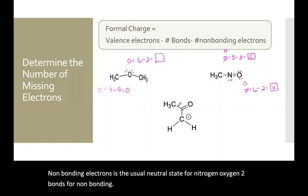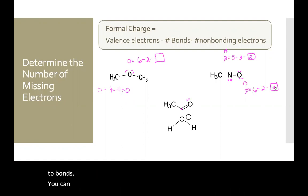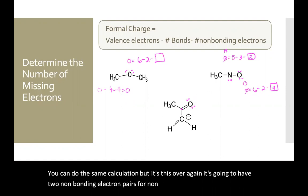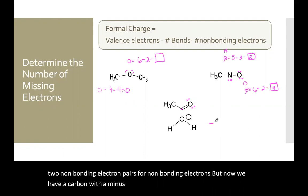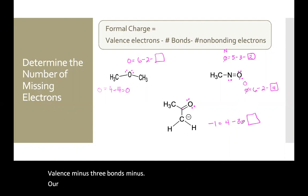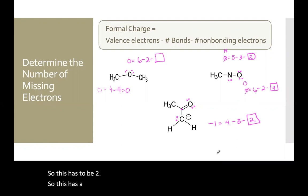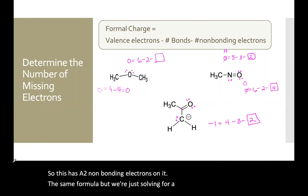Carbon with four bonds and no charge is fine — neutral. This oxygen with two bonds will have two lone pairs, four non-bonding electrons, same as before. But now we have a carbon with a minus one charge. So: minus one equals four valence minus three bonds minus our unknown non-bonding electrons. Four minus three is one, but we need to get to negative one, so this has to be two. This carbon has two non-bonding electrons on it. It's the same formula — we're just solving for a different variable.